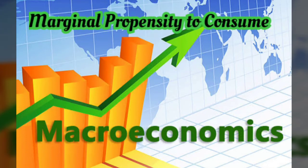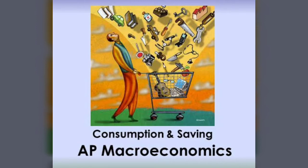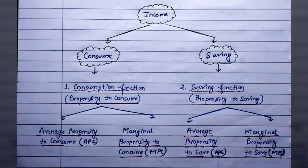Hello, good morning, dear students of Class 12. Today we will study about Marginal Propensity to Consume. As we have already done Average Propensity to Consume, let's begin with the income functions of consumption and saving. There are two functions of income: consumption and saving. We are still on consumption function, and now we start with MPC.